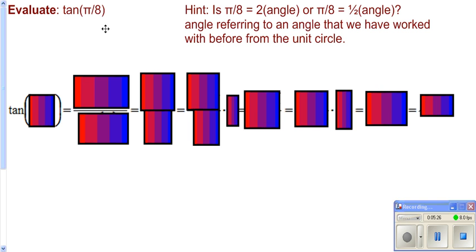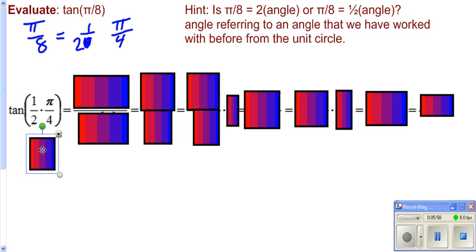We want to evaluate the tangent of pi over eight. You got to ask yourself, is pi over eight double an angle I'm used to working with, or is it half an angle you're used to working with? In this case, pi over eight is really half of pi over four. So pi over eight is really a half angle formula for our tangent, where your pi over four correlates to your u, your angle that you're dealing with.